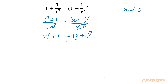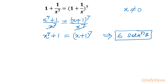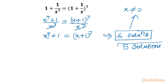Once I expand the RHS, x^7 is the leading term — the highest degree term — and on the left-hand side we also have x^7. These cancel, so the conclusion is 6 solutions are possible for this equation. However, x = 0 is exempted, so overall 5 solutions exist in the original equation.